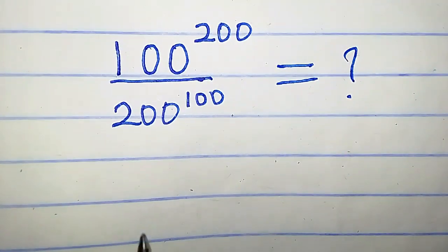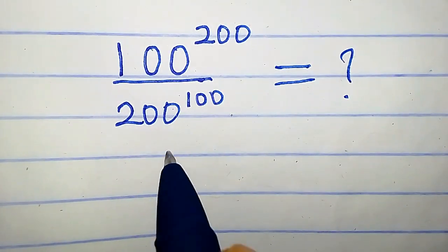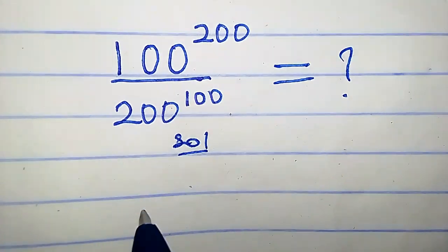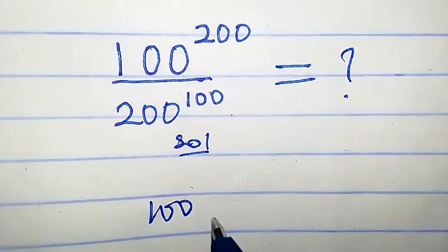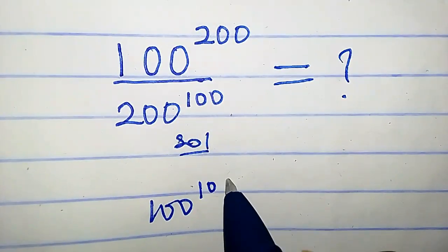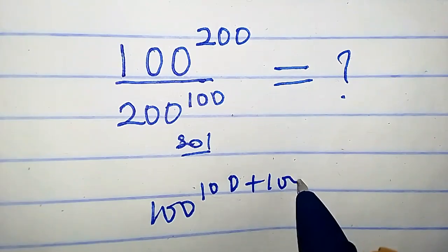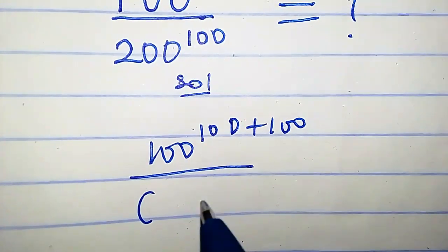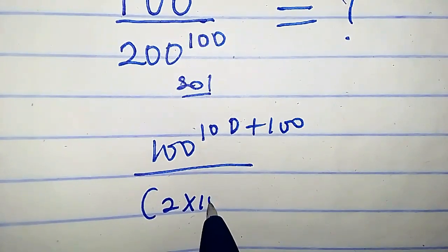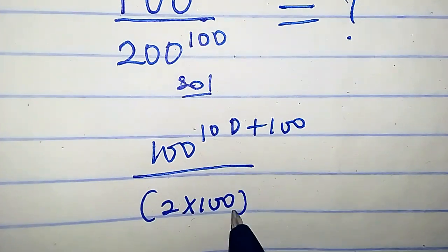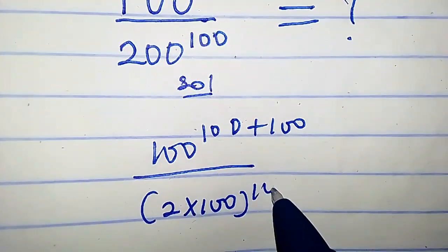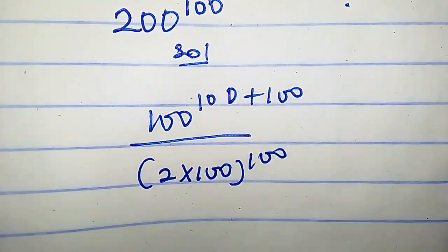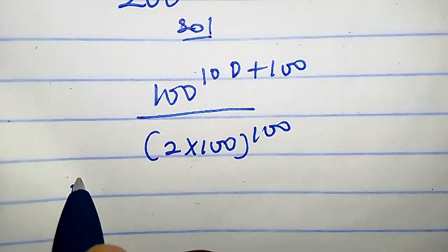How do we simplify this problem? We can write the numerator as 100 raised to the power 100 plus 100, over — we can write 200 as 2 times 100 — raised to the power 100.